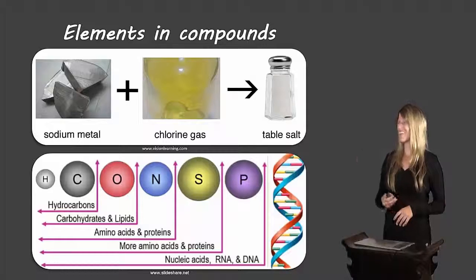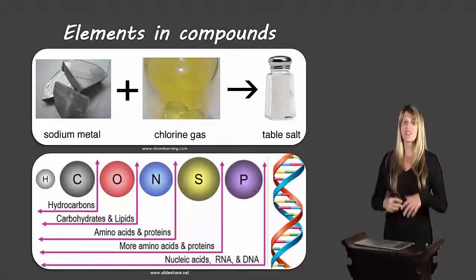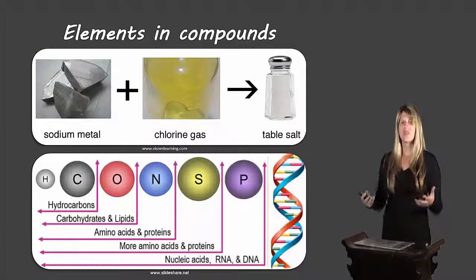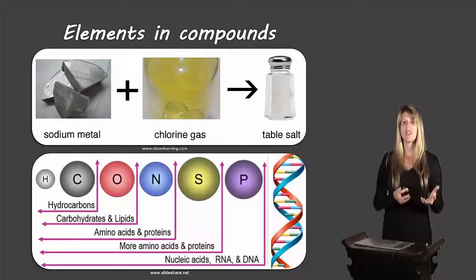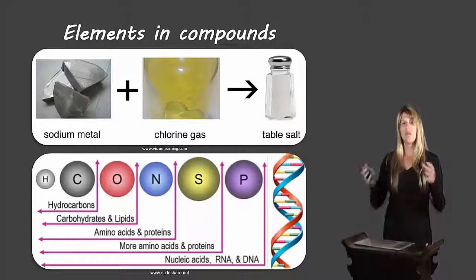Hello students, Ms. Swanson here. Today we're going to learn about elements and compounds — specifically, when we put elements together to make compounds, how many of each type of element are inside that compound. These pictures remind us that things in real life are often compounds made up of separate elements with very different properties than the final compound. For example, sodium metal, which is highly reactive, and chlorine gas, which is toxic — when those two combine, we get table salt, which we eat every day.